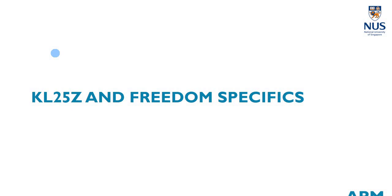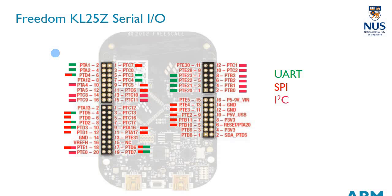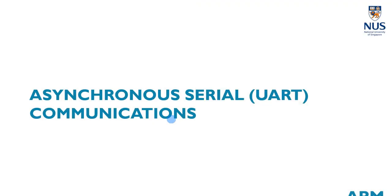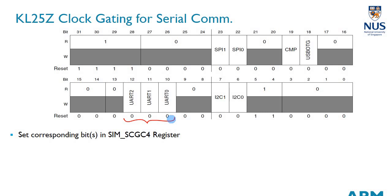Looking specifically at our FreedomBot microcontroller, the UART, SPI, and I2C pins are shown. We will focus on the UART pins — specifically Port E pin 22 and pin 23, which are used for the lab exercise. As always, you need to set the corresponding clock gating bits for the UART module, and also for the port, since UART pins are multiplexed with GPIO pins. Both the port and the UART module must be clock-gated and powered.